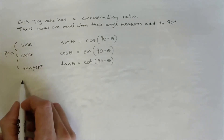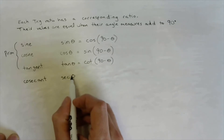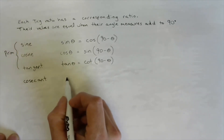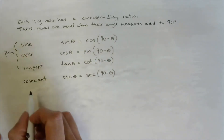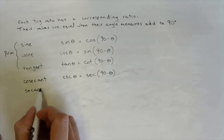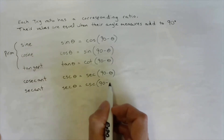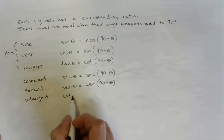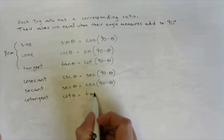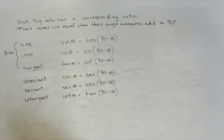For the secondary trig ratios: cosecant corresponds to secant, so cosecant of theta equals the secant of 90 minus theta. Secant of theta equals the cosecant of 90 minus theta. And cotangent of theta equals the tangent of 90 minus theta. So there are two things to remember: the reciprocal ratios, and these corresponding ratios.